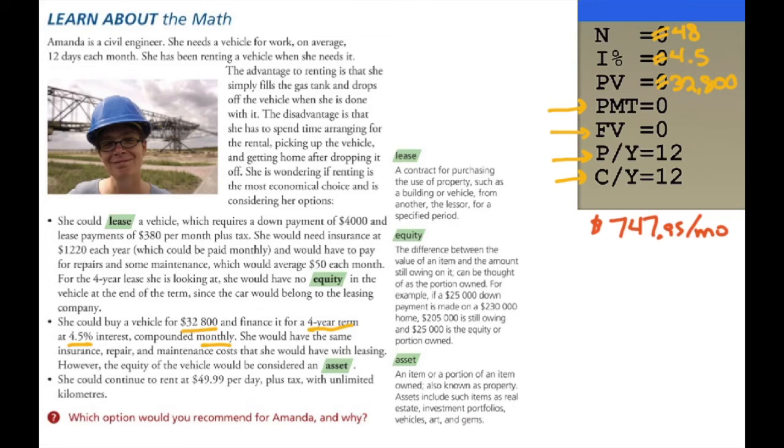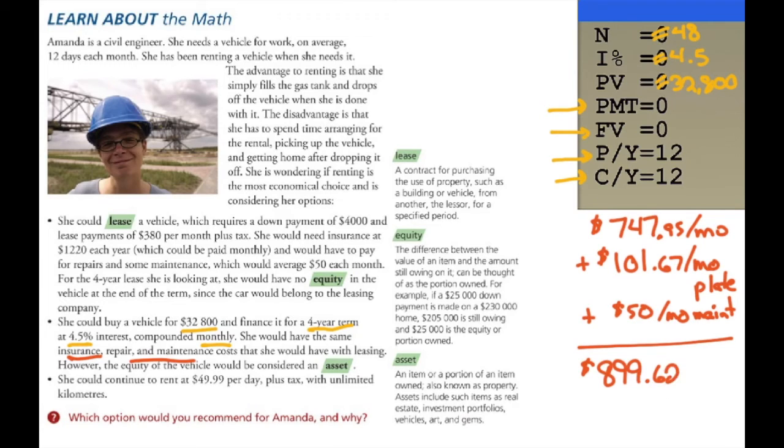We also have to take into account the insurance so her plates, which we worked out with the lease was $101.67. We also need the repair and maintenance, which we worked out to $50. Adding that all together would give her a monthly cost of $899.62 in total.